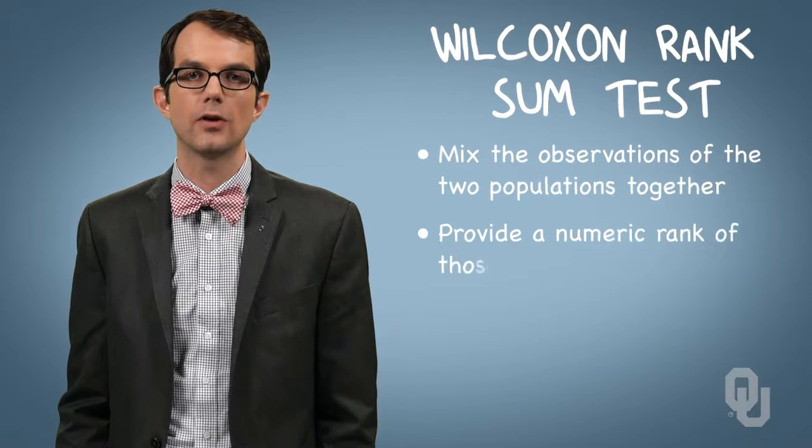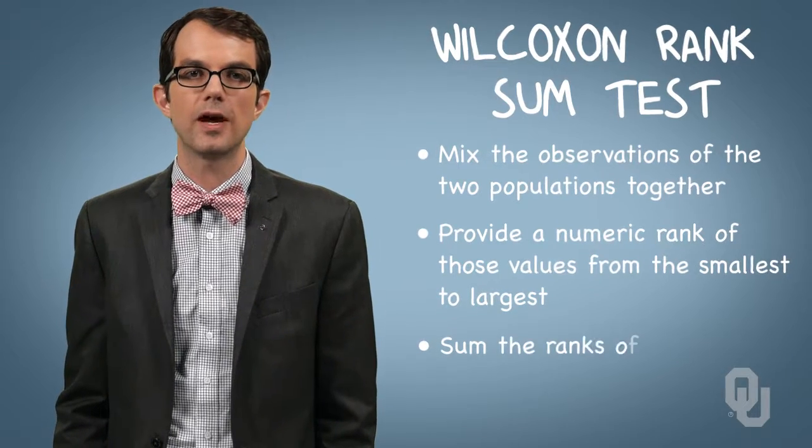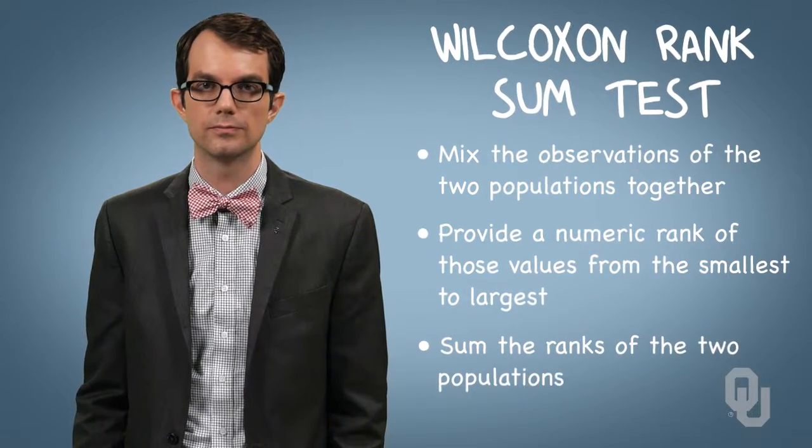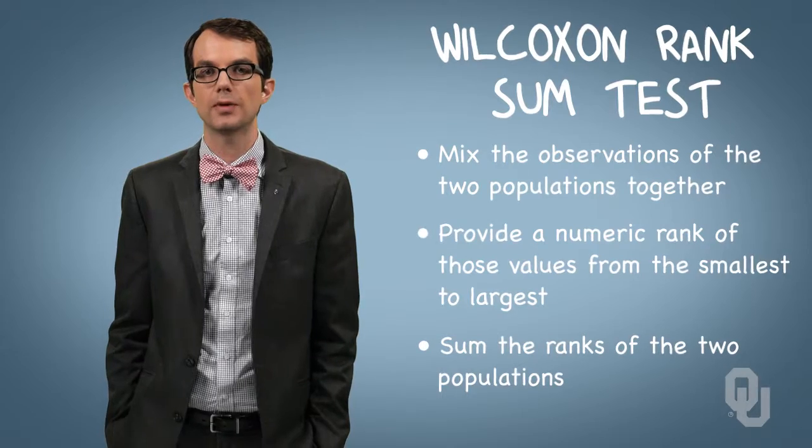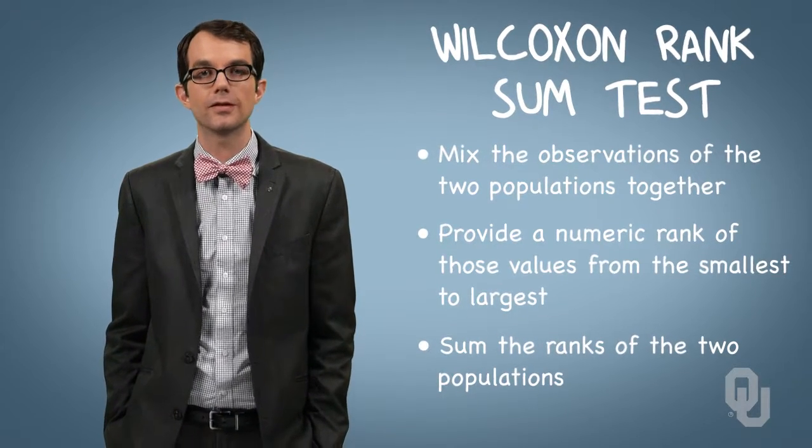We provide a numeric rank of those values from smallest to largest, and then sum up the ranks of the two populations. If the sum of the ranks of the two populations are a lot different from each other, then perhaps the two populations are not the same.